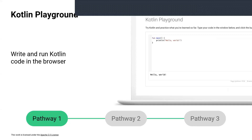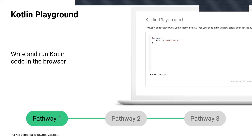The site looks something like this. You can write your code in this window and hit the green arrow to run it. The result of your code, known as the output, will show up at the bottom of the window where it says 'Hello World'.